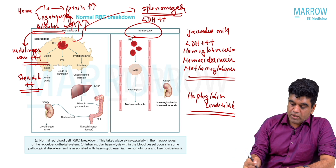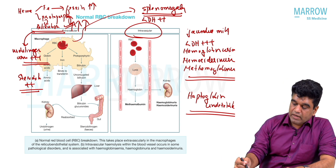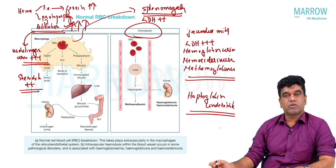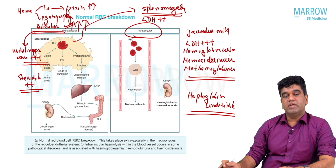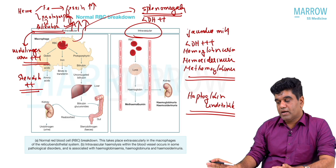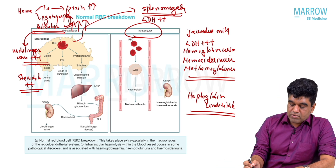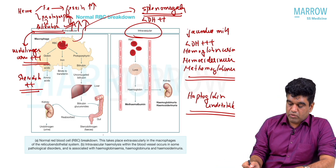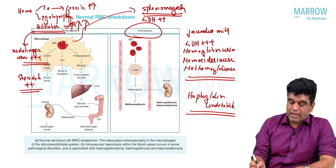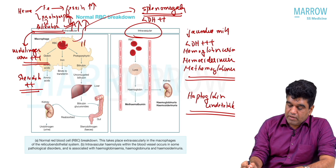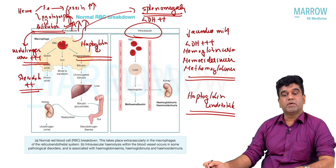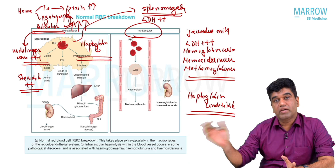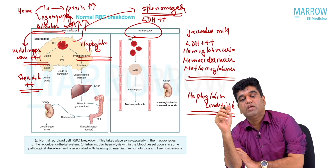So, in extravascular hemolysis many changes occur, and in intravascular hemolysis many changes occur. Extravascular hemolysis — the king is the spleen. Intravascular hemolysis happens in the blood itself. In extravascular hemolysis: urobilinogen in urine, stercobilinogen in feces, indirect hyperbilirubinemia, and haptoglobin decreases — but it is not going to be undetectable like in intravascular hemolysis.